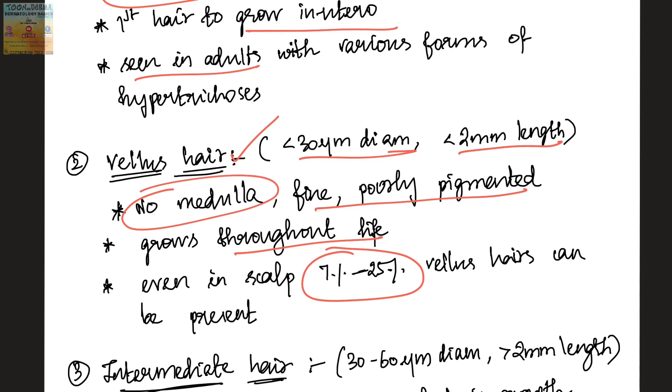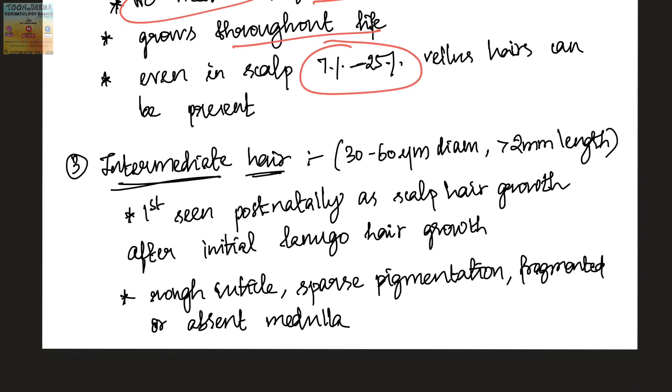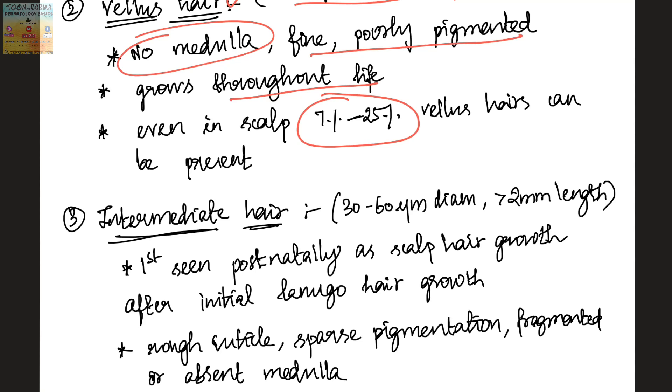Next is intermediate hair. This is about 30 to 60 micrometers in diameter and more than 2 mm in length. It is mostly seen postnatally as scalp hair growth after the initial lanugo hair growth. How it differs from vellus and lanugo hair is that it has a rough cuticle, sparse pigmentation, and a fragmented medulla.